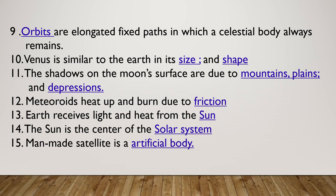Meteors heat up and burn due to friction when they enter Earth's atmosphere. The Earth receives light and heat from the Sun. The Sun is the center of the solar system.